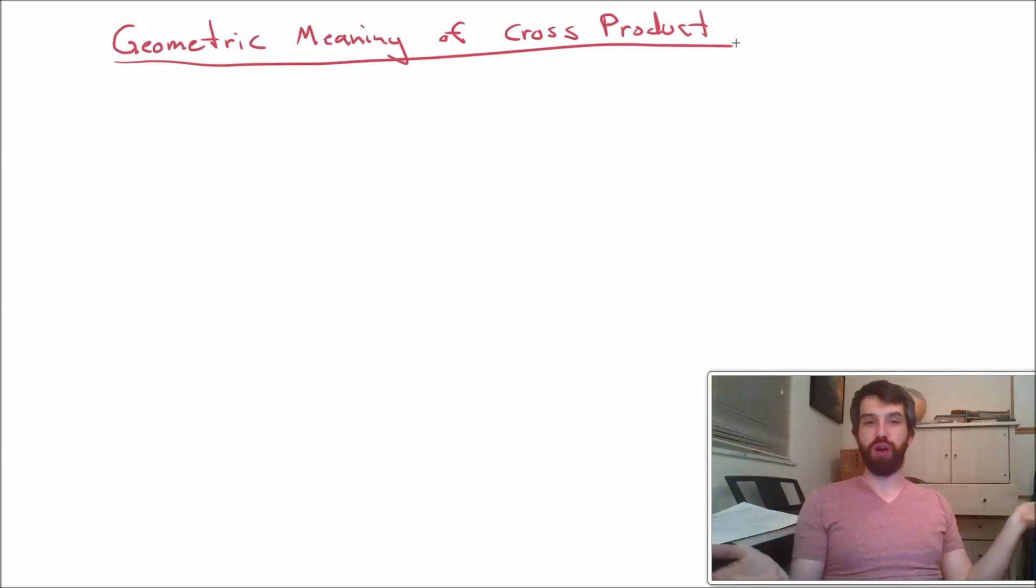Vectors are very geometric concepts. So every time I want to come up with an algebraic thing, the dot product or the cross product and so on, I want to know what does it mean geometrically.